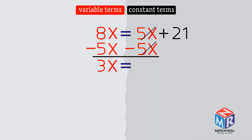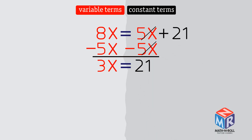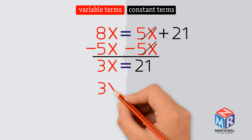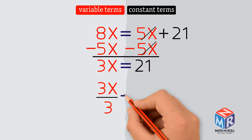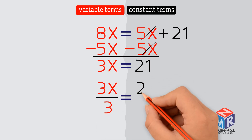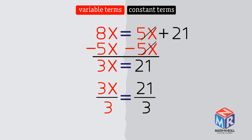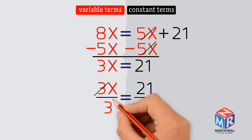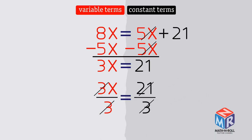3x equals 21. We divide both sides by 3, and we are left with x equals 7.